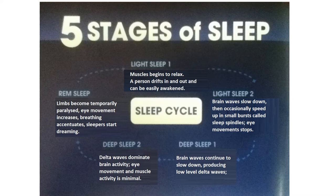Stages 3 and 4 are both deep sleep stages. Brain waves continue to slow down, producing low-level delta waves. Delta waves dominate brain activity; eye movements and muscle activity are minimal.